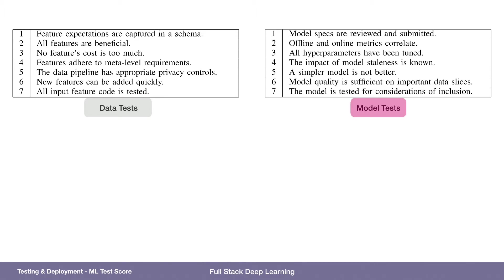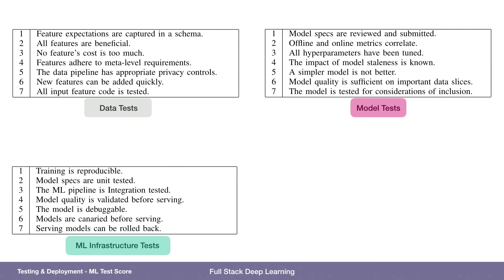For model tests: model specs are reviewed and submitted, offline and online metrics correlate, all hyperparameters have been tuned, the impact of model staleness is known, a simpler model is not better, model quality is sufficient on important data slices, and the model is tested for considerations of inclusion — this refers to the bias problem we've discussed.